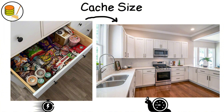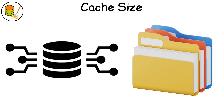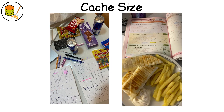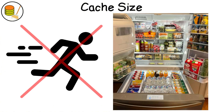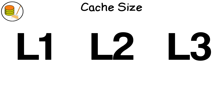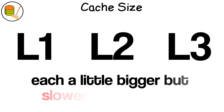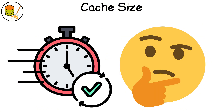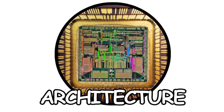Cache is your CPU's secret stash of memory — the ultra-fast snack drawer it uses before running to the slower kitchen that is your RAM. When your CPU needs data it uses often, it keeps it right next to its brain. Think of it like a student who keeps snacks within reach so they don't have to run to the fridge every five minutes. Cache comes in levels: L1, L2, L3 — each a little bigger but slower than the last. It's tiny but mighty.